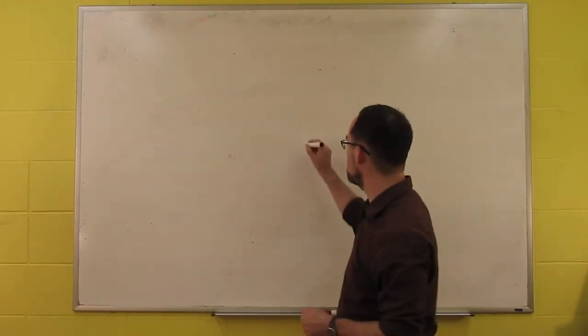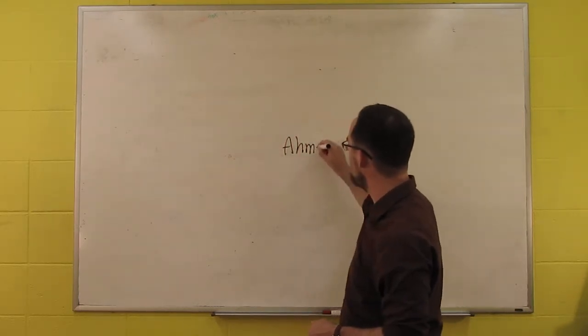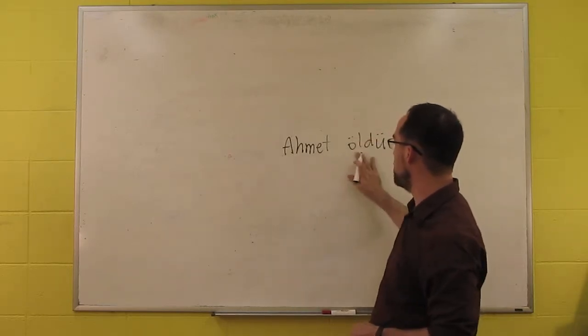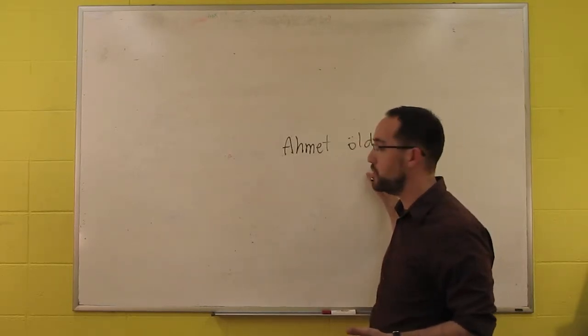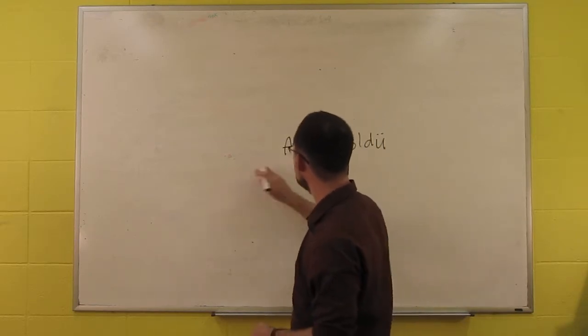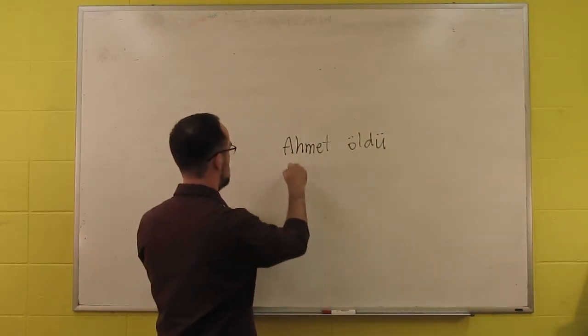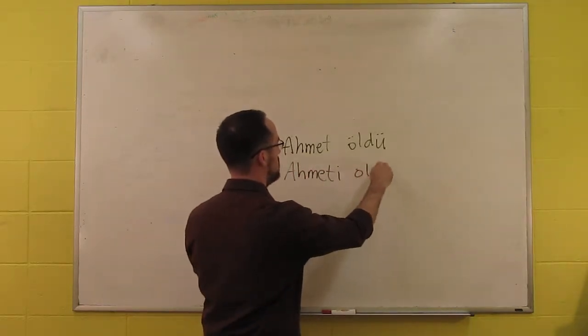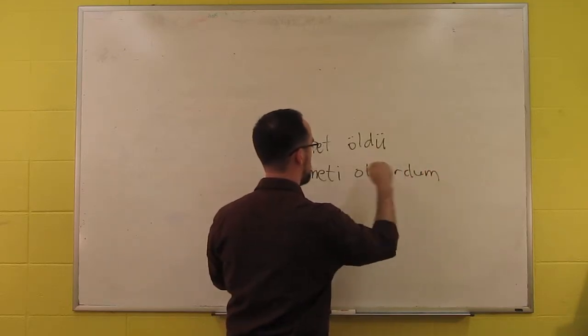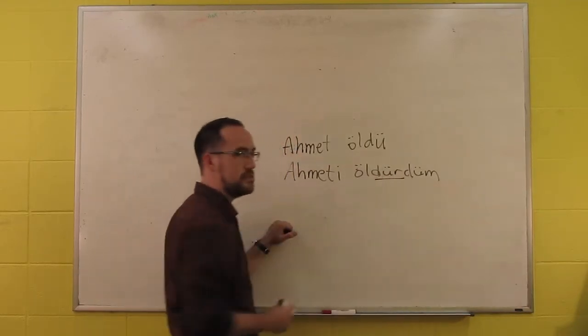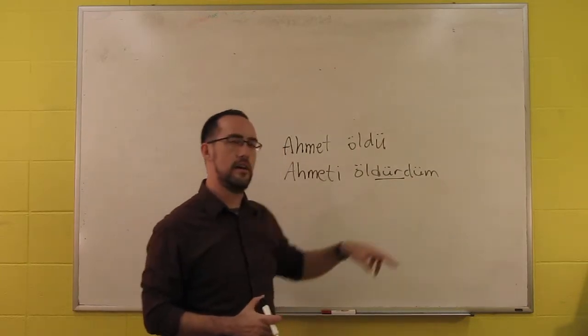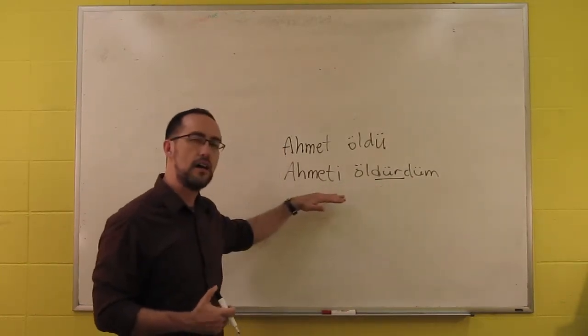So a classic case from Turkish, if you say Ahmet öldü, this is Ahmet died, straightforward. If we say Ahmet öldürdüm, here we've added the causative suffix, in this case dür, and this is first person singular now, so this would be I made Ahmet die.